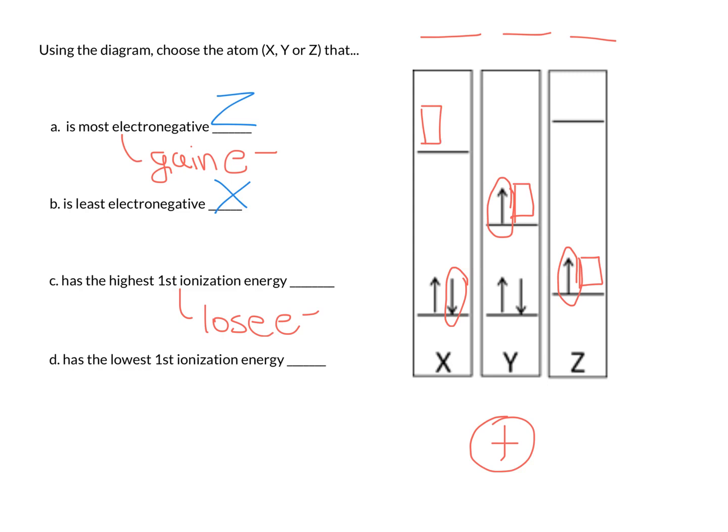So, when we think about taking these electrons and removing them all the way to the ceiling, right here, I would say that the one with the highest first ionization energy is X, because I have to drag it the longest distance to go to the ceiling.